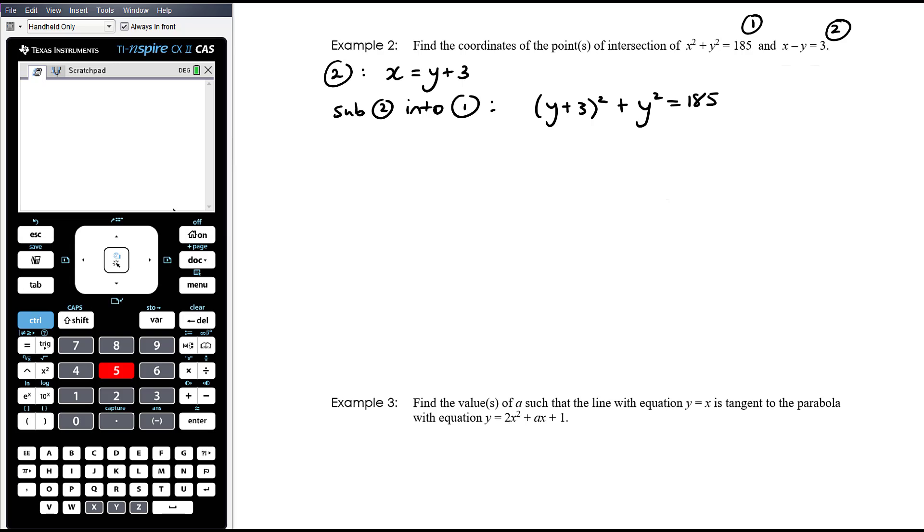So that's going to give us y plus 3 squared plus y squared equals 185. Now we've got one equation only in y, so let's expand everything out. I'm just going to move that equation to give me a bit more room later on. Okay, so y plus 3 all squared, perfect square is y squared plus 6y plus 9 plus y squared equals 185. So that is 2y squared plus 6y. I'm going to take away 185. So 9 minus 185, or you might prefer to do 185 minus 9, but then it'll be negative. So that's going to be 176 equals 0.